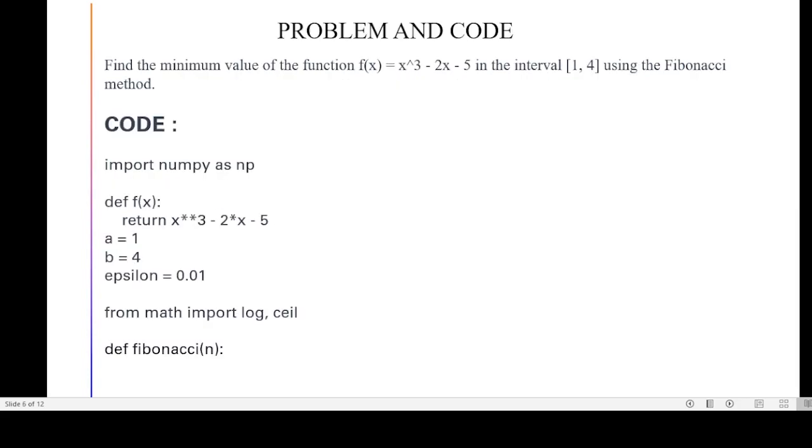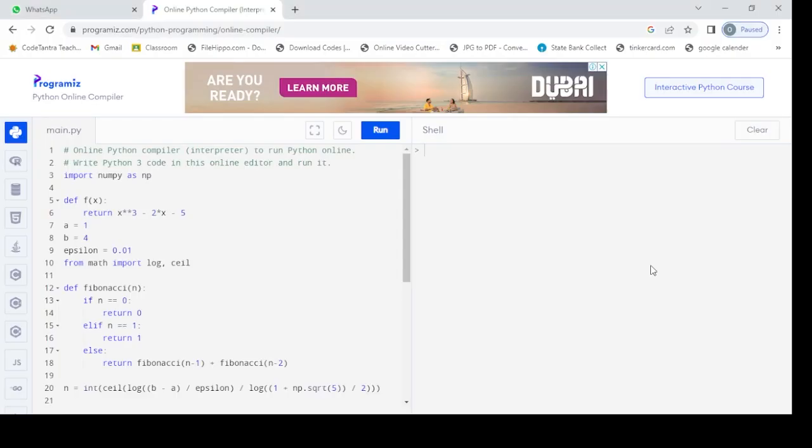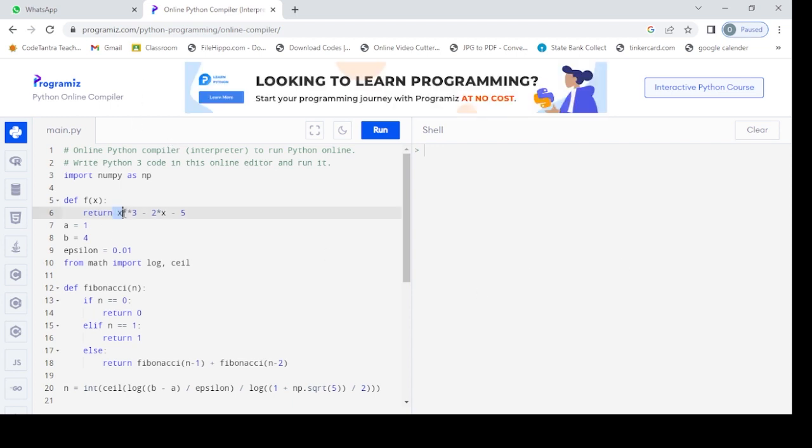Then we check about its simple example and code. Find the minimum value of function f(x) = x^3 - 2x - 5 in interval [1,4] using Fibonacci method. Now we check about its code. First import numpy as np. We are defining the function f(x) as x^3 - 2x - 5. And we are taking two initial intervals a = 1 and b = 4.